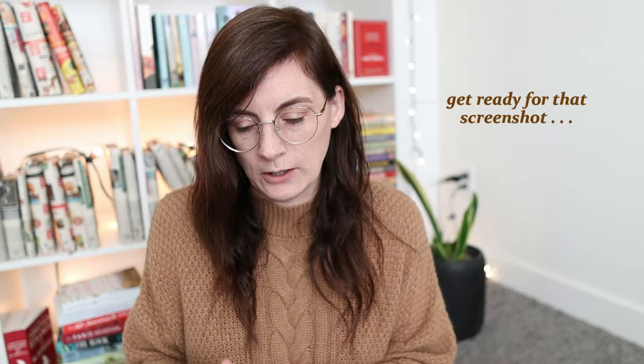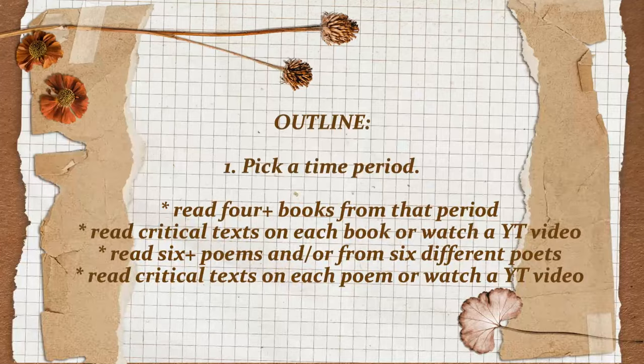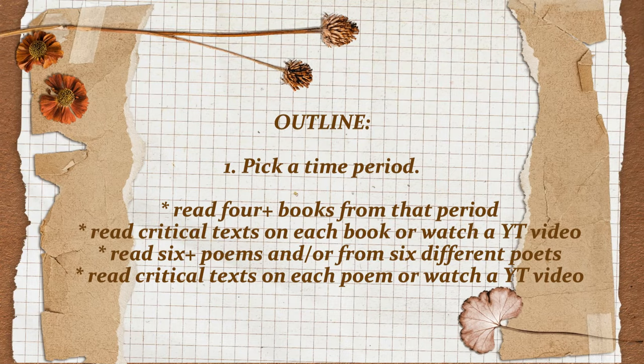Read some books from the time period, then read some critical texts or watch YouTube videos that dive deep into those books — something that takes you beyond just having read the story so you understand themes and what's going on. Then I'm going to read poems from six-plus different poets from that time period. I enjoy poetry so I'll probably go way above that number, but six is the minimum.